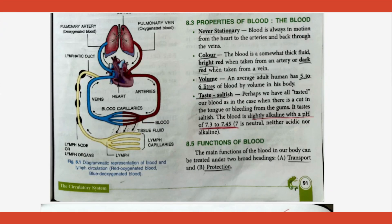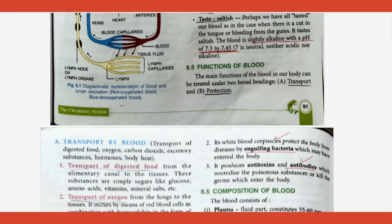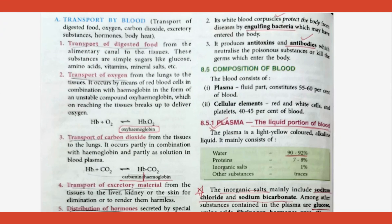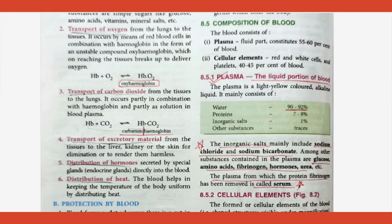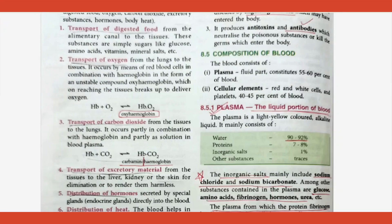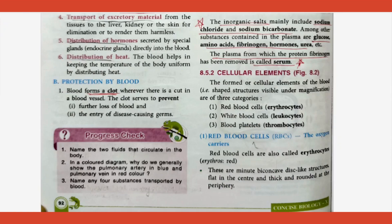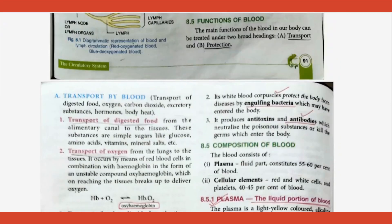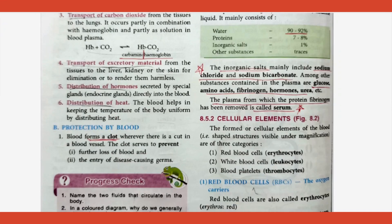Properties of blood: hardly any question comes except for the pH of blood, so underline 7.3 to 7.4 — nearing neutral but slightly alkaline. Functions of blood can be categorized into transport of digested food, oxygen, carbon dioxide, excretory material, and hormones; regulatory functions like heat regulation; and protection functions like clotting of blood and immunity. Two-mark questions can be expected here.